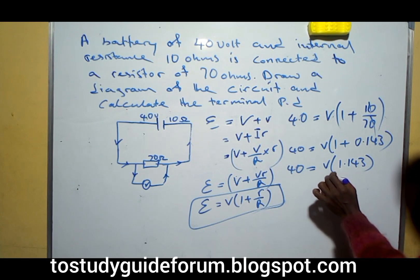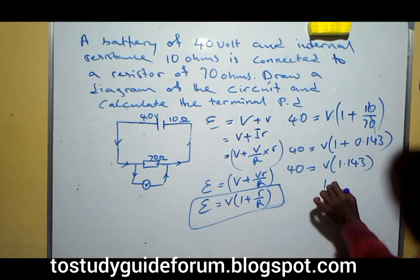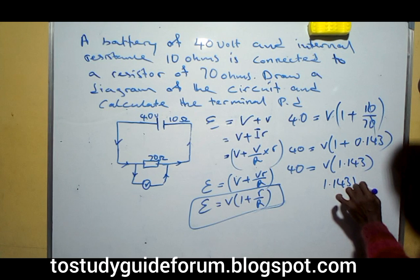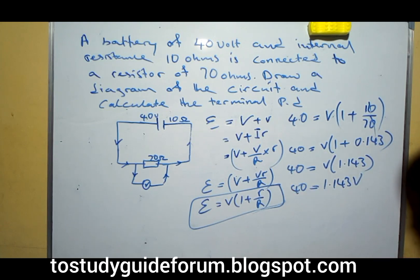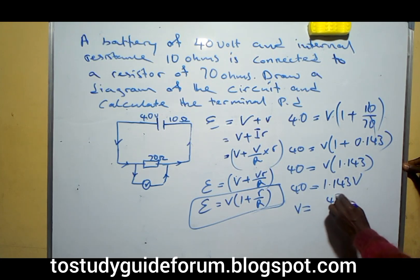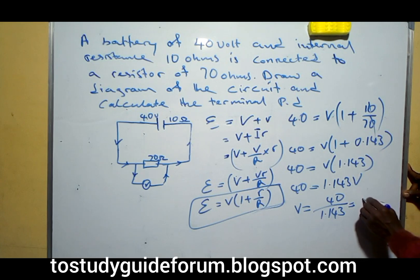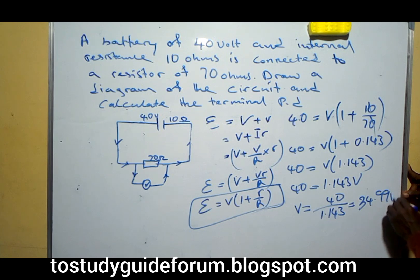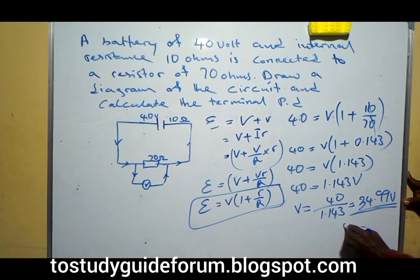In order to open the brackets, so we have 1.143 V equal to 40, so now V will then be equal to 40 over 1.143. That will give us 34.99 V, or we can say approximately, or we can say it was 35 V.